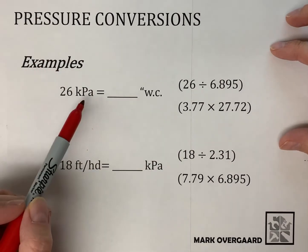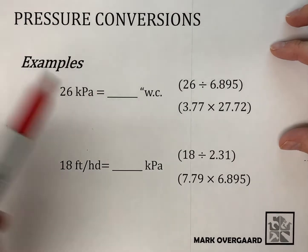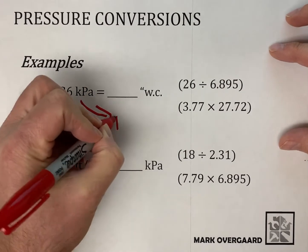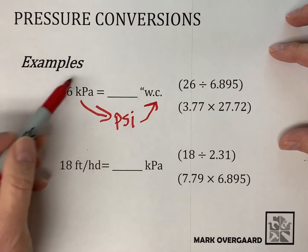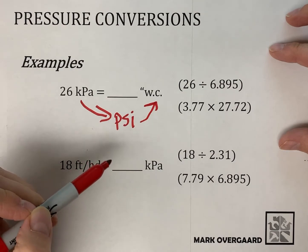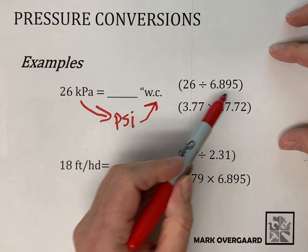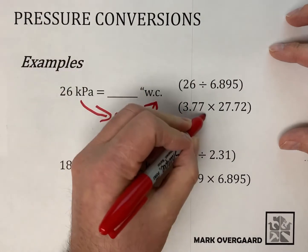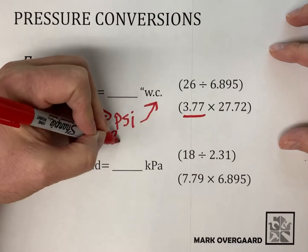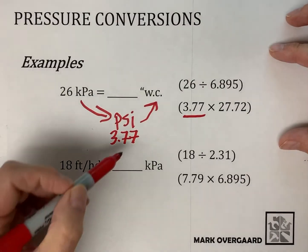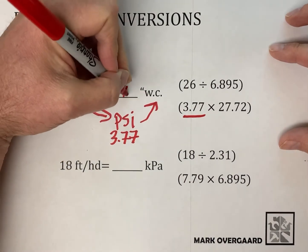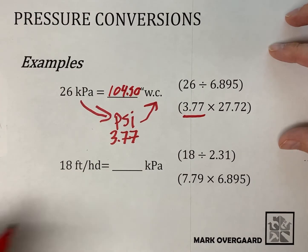So what I can do is I can say, okay, what if I went to PSI and then up to water column? So translated the kPa into PSI? Well, there you go. We have 26 kPa. We know that number, 26 divided by 6.895. What we're going to get is PSI, and we get, we've already done the calculation here, 3.77 PSI. Well, now we can take that and put it into water column using our 27.72. So the answer works out to be somewhere in the neighborhood of 104.50 inches of water column. And we've just used PSI, it's kind of like an intermediary.